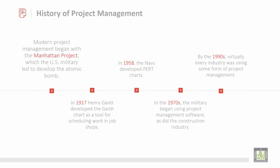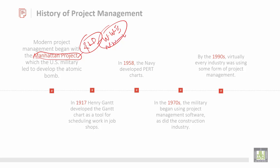Now let's talk about the history of project management. Modern project management began with the Manhattan Project — an R&D effort undertaken during World War II to produce nuclear weapons by the US, in collaboration with the UK and Canada. This led to the development of the atomic bomb. Then in 1917, Henry Gantt developed the Gantt chart, which is a scheduling tool used to schedule projects and job shops.